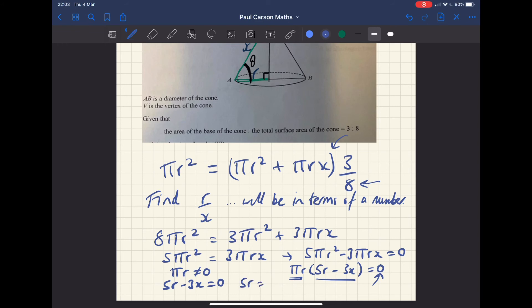Hopefully you can see where this is going because we're going to make r over x a subject. So if I move the x over, divide by x, divide by five, really running out of room here, sorry. Then I'm going to get r over x is equal to three over five.